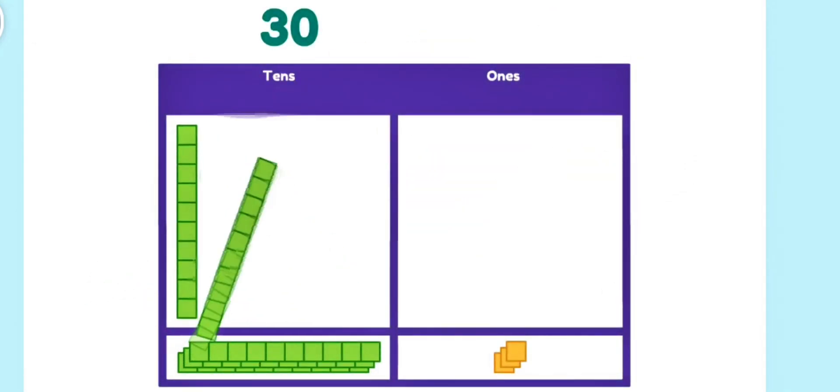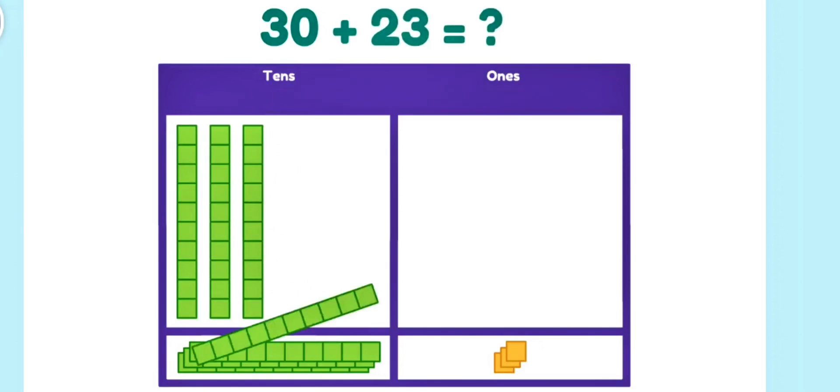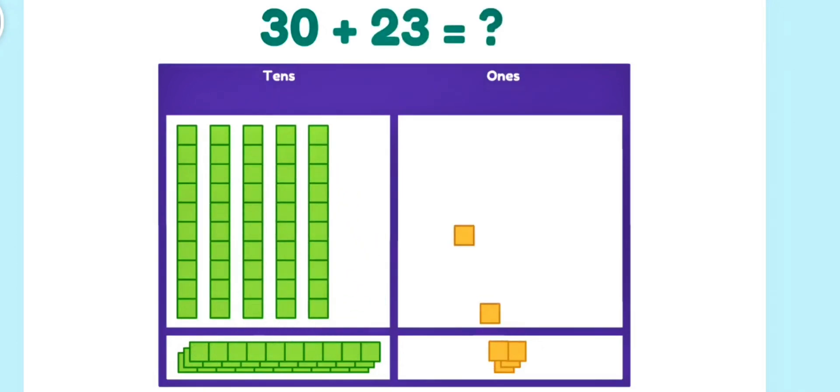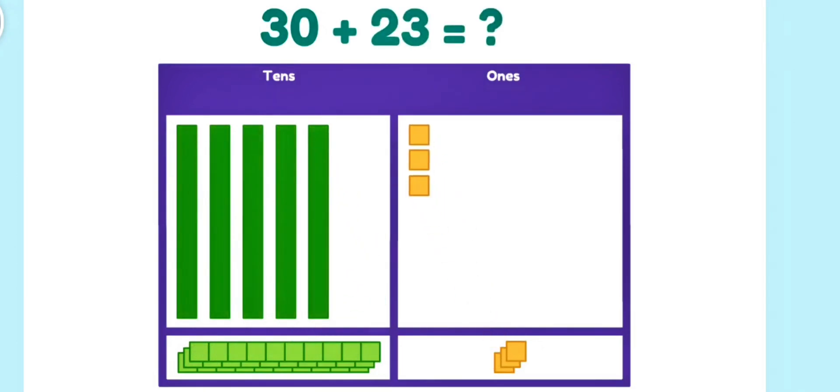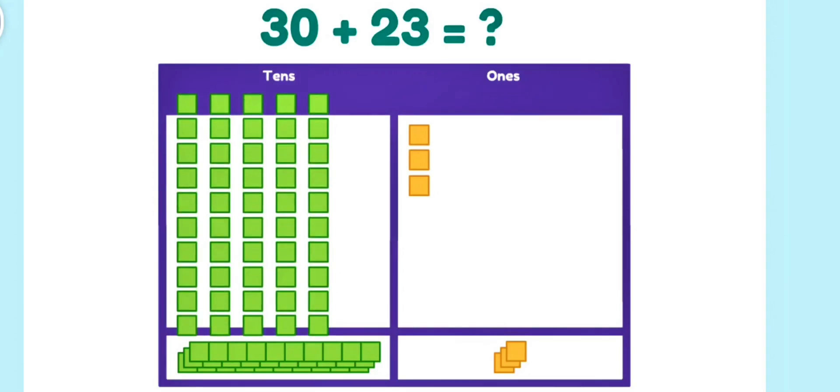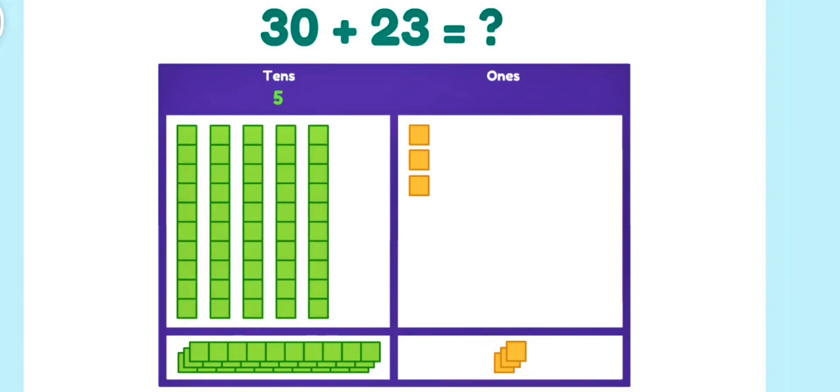Let's add thirty and twenty-three! These rods are made up of ten blocks! There are five rods! One, two, three, four, five! That's fifty! And there are three blocks extra! That means there are fifty-three! Five rods and three blocks!